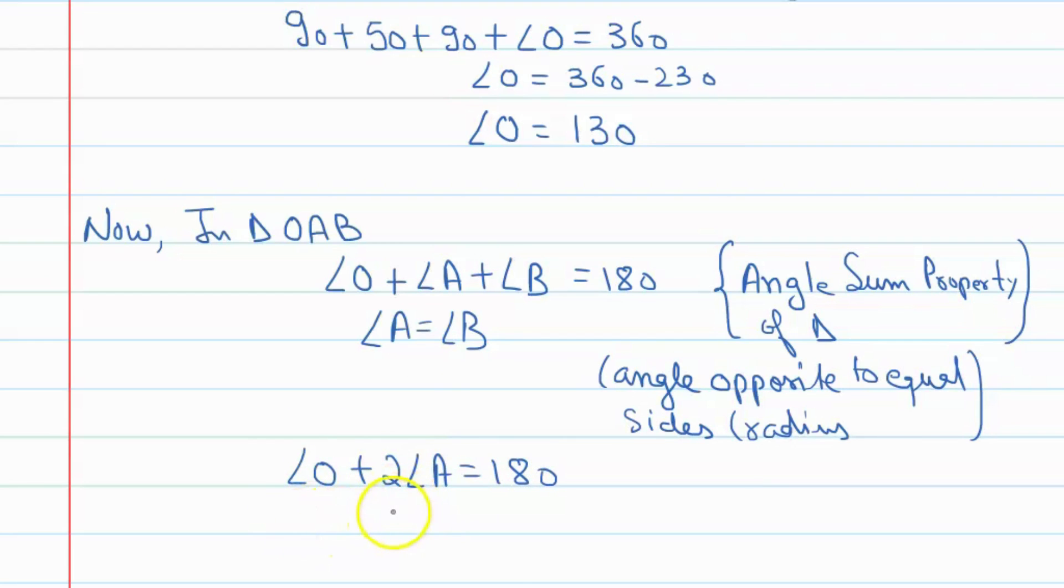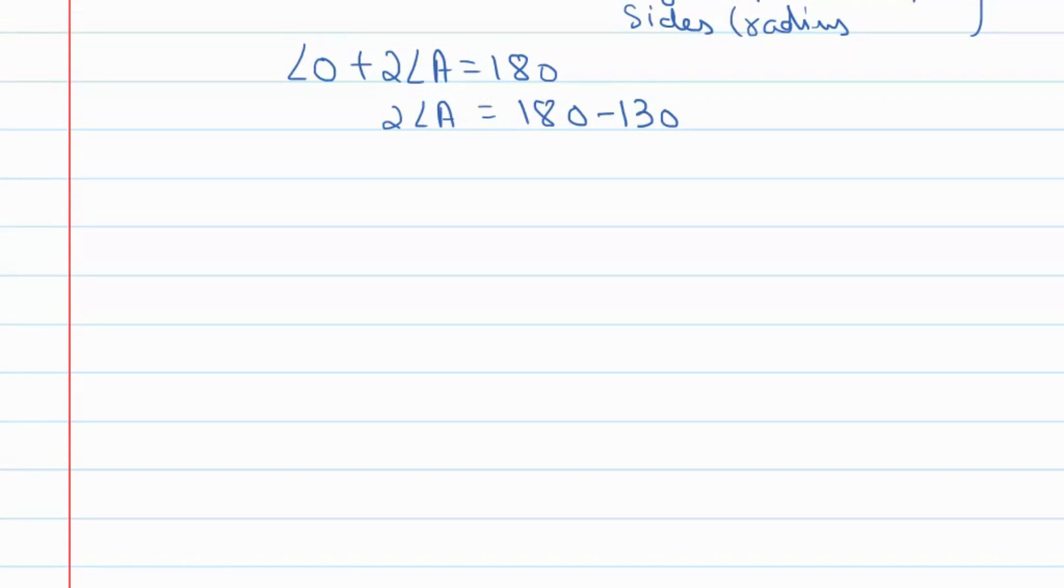So, angle O we will take... angle O is equal to 130, we will take 130 degrees. If we will do 180 minus 130, it is double of angle A equal to 50 degrees and angle A is equal to 25 degrees, 50 divided by 2.